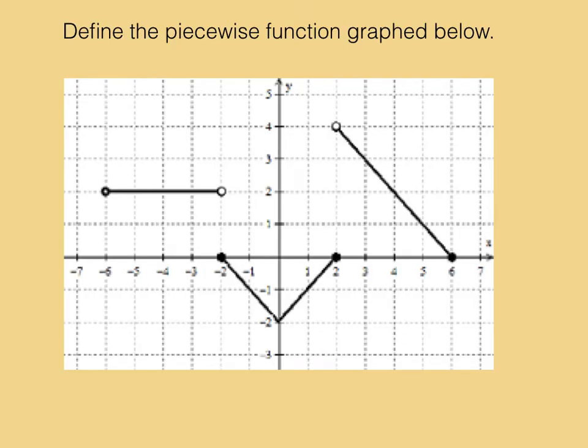This function is made of three pieces. The first piece, which will be this one, is a horizontal line. Every point on this line has the y-coordinate of 2. So this equation is of the form f of x equals 2.